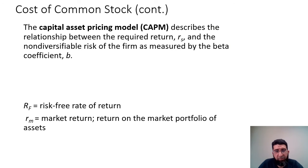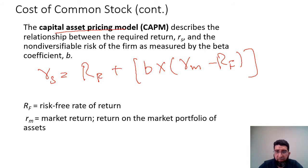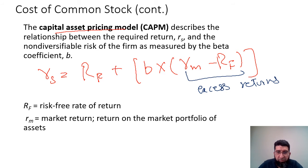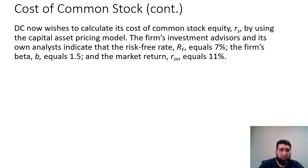After calculating the cost of capital through the constant growth model, we can also use the Capital Asset Pricing Model (CAPM). CAPM is written as RS equals the risk-free rate plus beta multiplied by the excess return, which is the market return minus the risk-free rate. Beta represents the non-diversifiable risk factor — the market compensates investors only for non-diversifiable risk, not diversifiable risk.